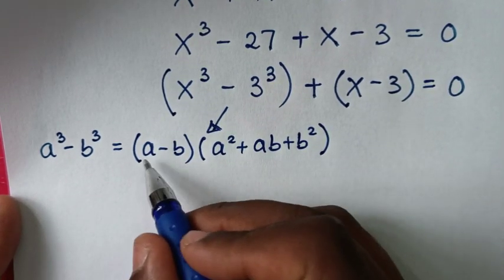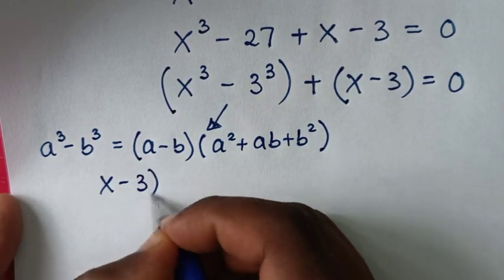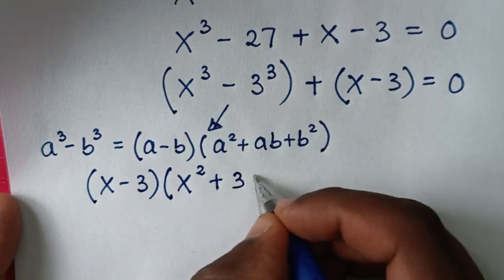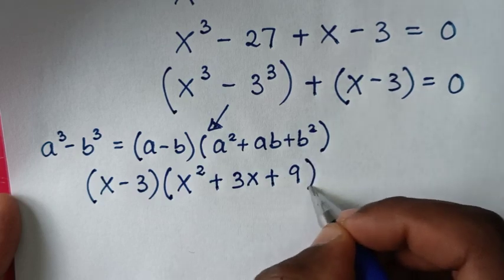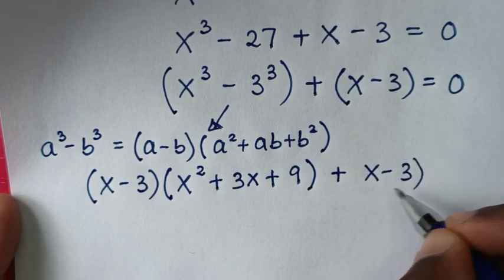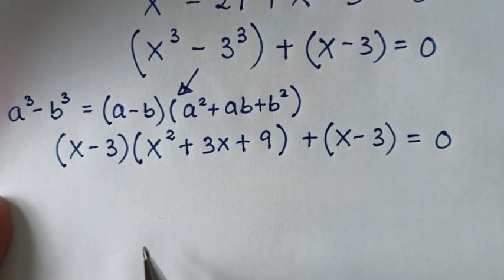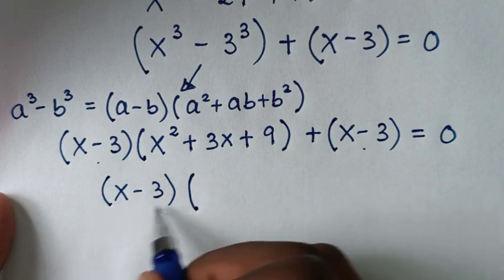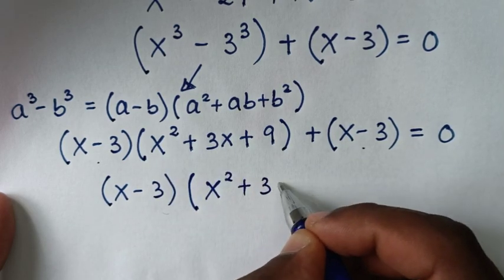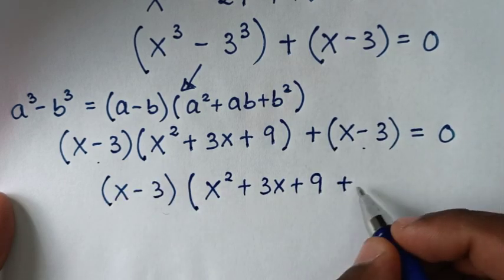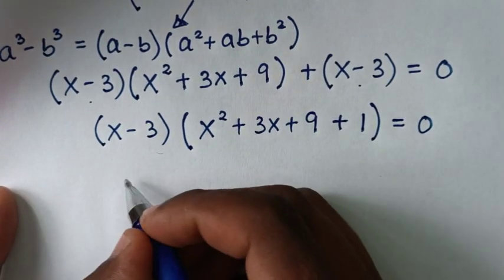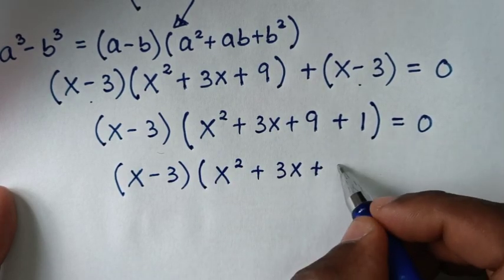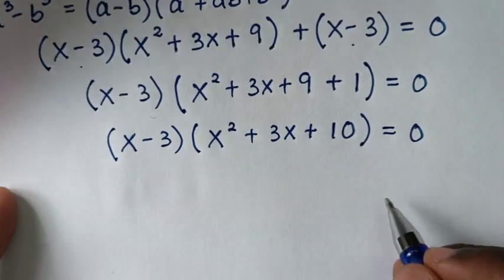Applying this with a = x and b = 3, we get the factor (x - 3). Then (x - 3) is also common to the term (x - 3), so factoring it out gives (x - 3)(x² + 3x + 9 + 1) = 0, which is (x - 3)(x² + 3x + 10) = 0.